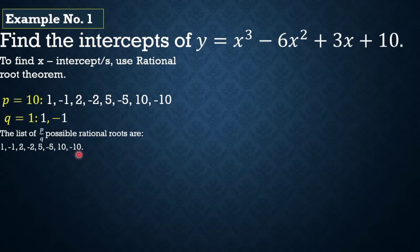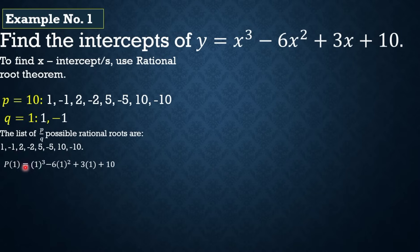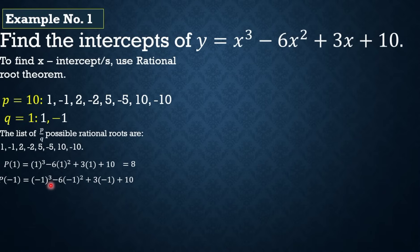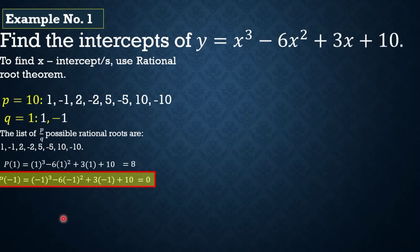Simulan natin — start tayo kay positive 1. So 1³ - 6(1²) + 3(1) + 10 = 8. Kailangan nating makuha ang 0, so si 1 ay hindi ang x-intercept. Proceed tayo kay negative 1: (-1)³ - 6(-1)² + 3(-1) + 10 = 0. Since nag-equal sa 0 itong negative 1, ibig sabihin si negative 1 ay isa sa mga x-intercept.